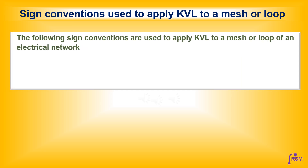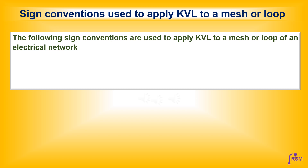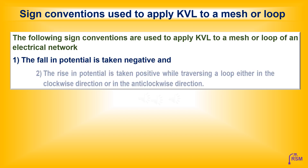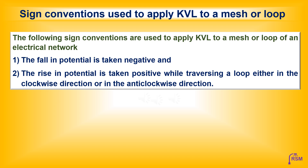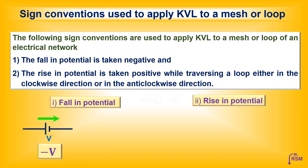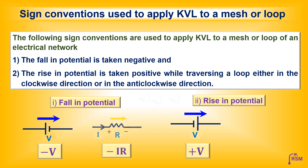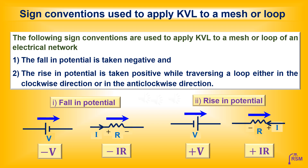The sign conventions used to apply KVL to a mesh or loop are: falling potential is taken negative and rising potential is taken positive while traversing a loop in either the clockwise or anticlockwise direction. The source voltage is taken negative while moving from the positive terminal to the negative terminal of the battery, due to a fall in potential. The source voltage is taken positive while moving from the negative to the positive terminal, due to a rise in potential. The IR drop is taken negative while moving in the current direction, and positive while moving against the current direction.